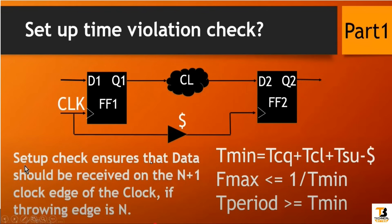The setup check ensures that data should be received on the N+1 clock edge if the launching edge is the Nth clock. For example, if flip-flop 1 is launching data at the Nth clock edge, this data should be received at flip-flop 2 on the N+1 clock edge — not on N+2, N+3, and so on. That means this check will ensure that data will be stable at the input of flip-flop 2 before the N+1 clock edge so that it can be received safely.